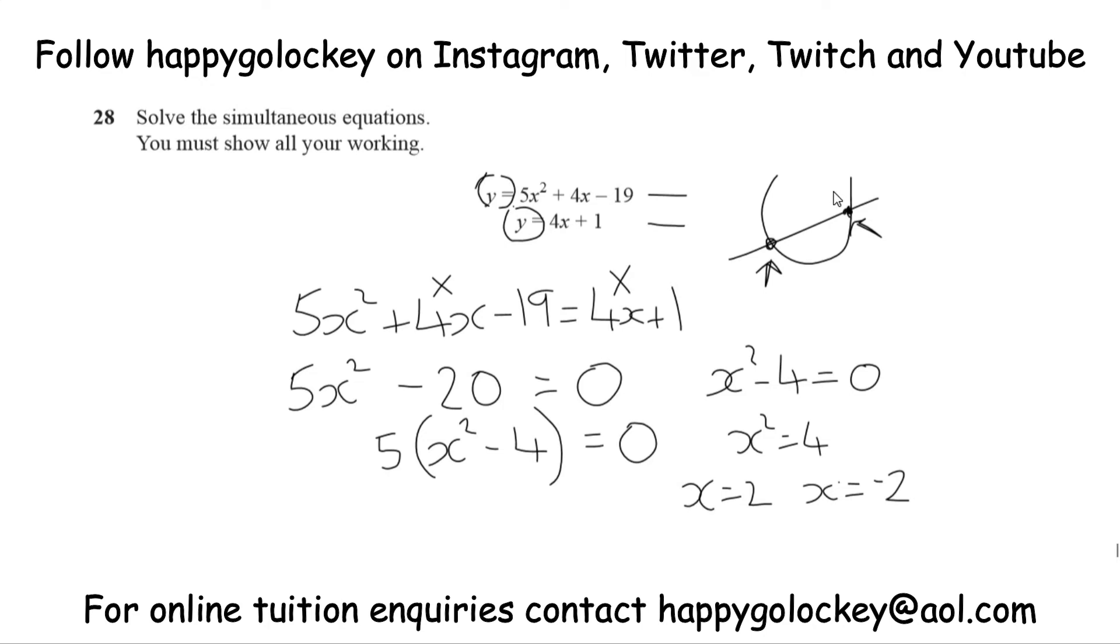Alright, the easiest one to then substitute to find the y is probably the second one, y equals 4x plus 1. So let's write down the equation, y equals 4x plus 1. When x equals 2, we've got to do 4 lots of 2 plus 1, that's 8 plus 1, so that's 9.